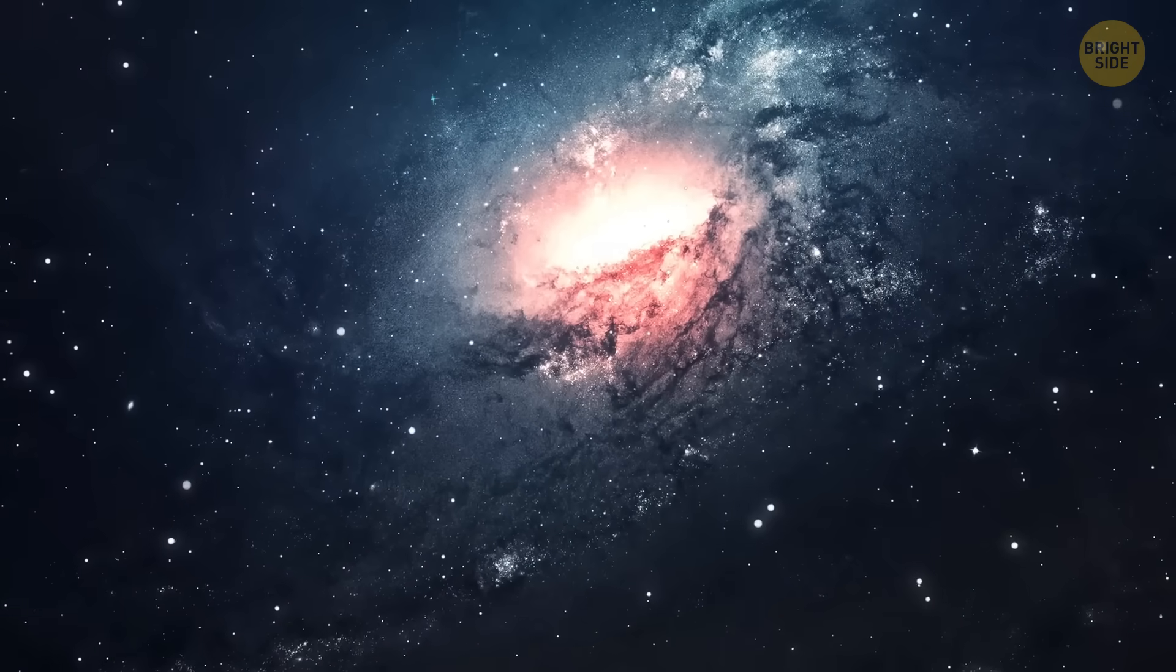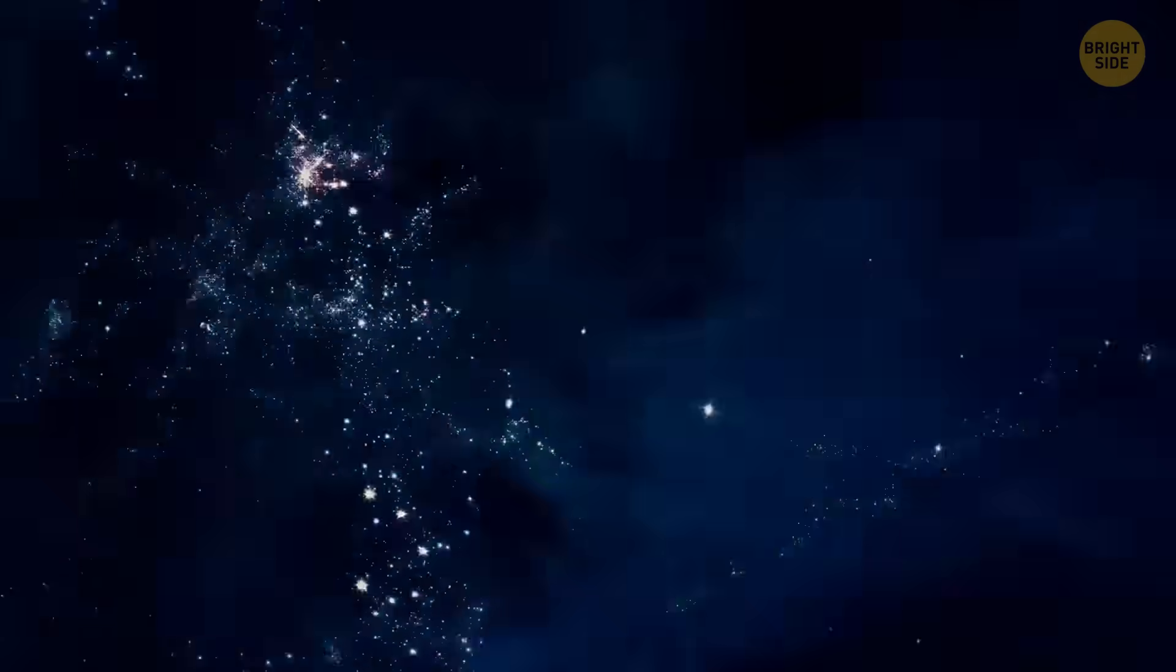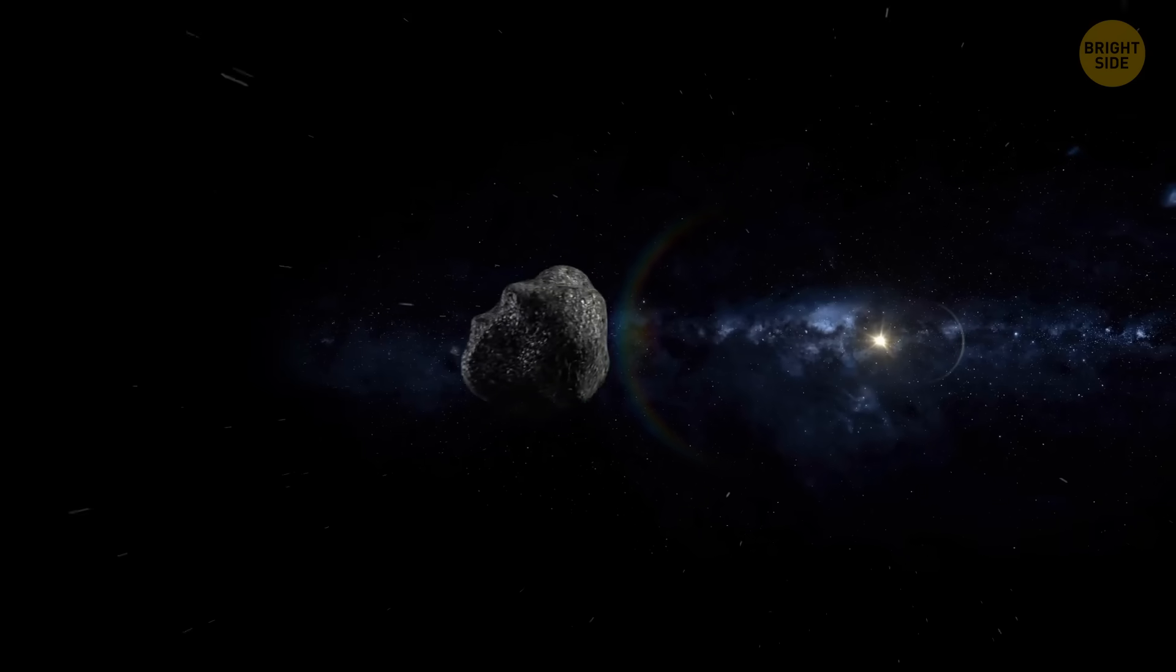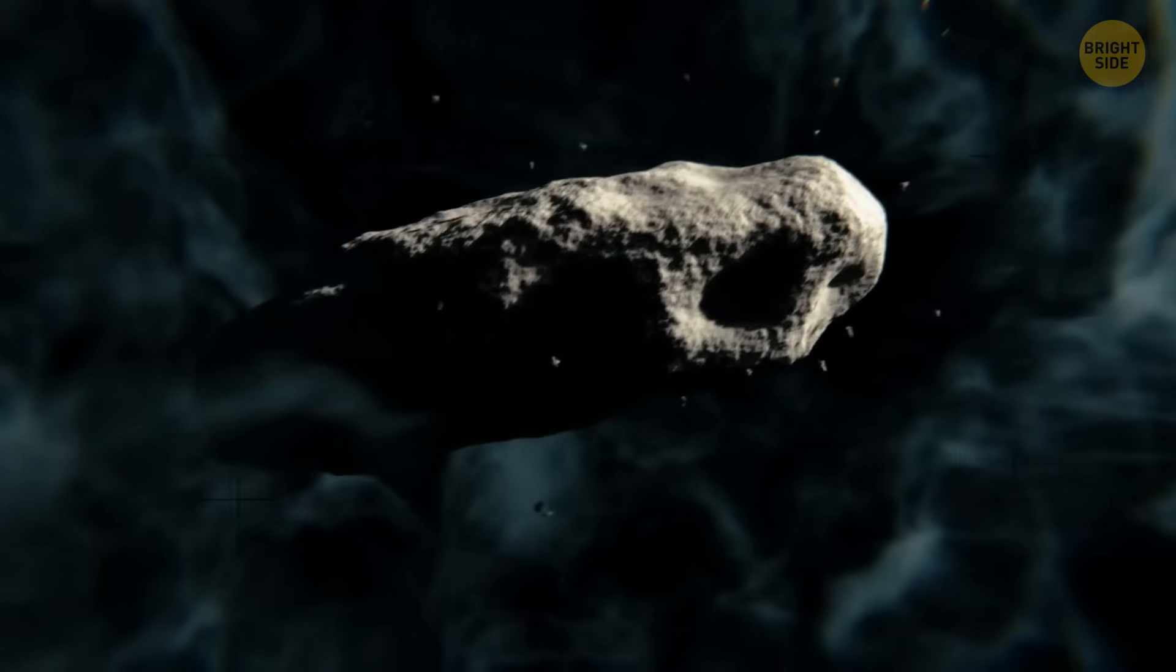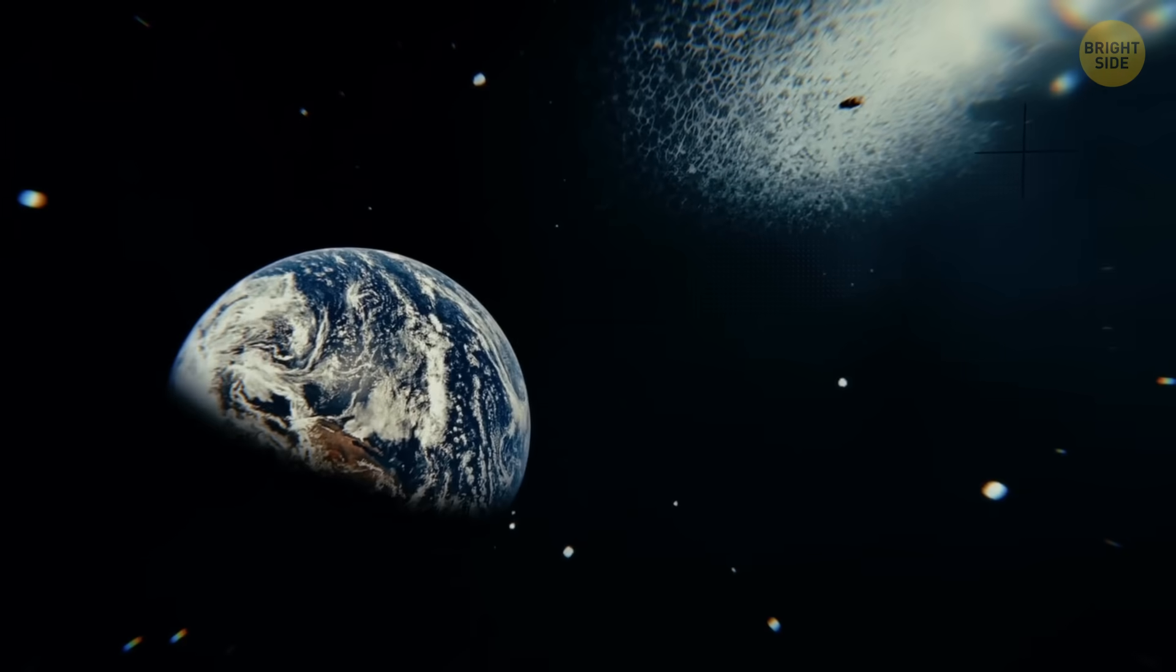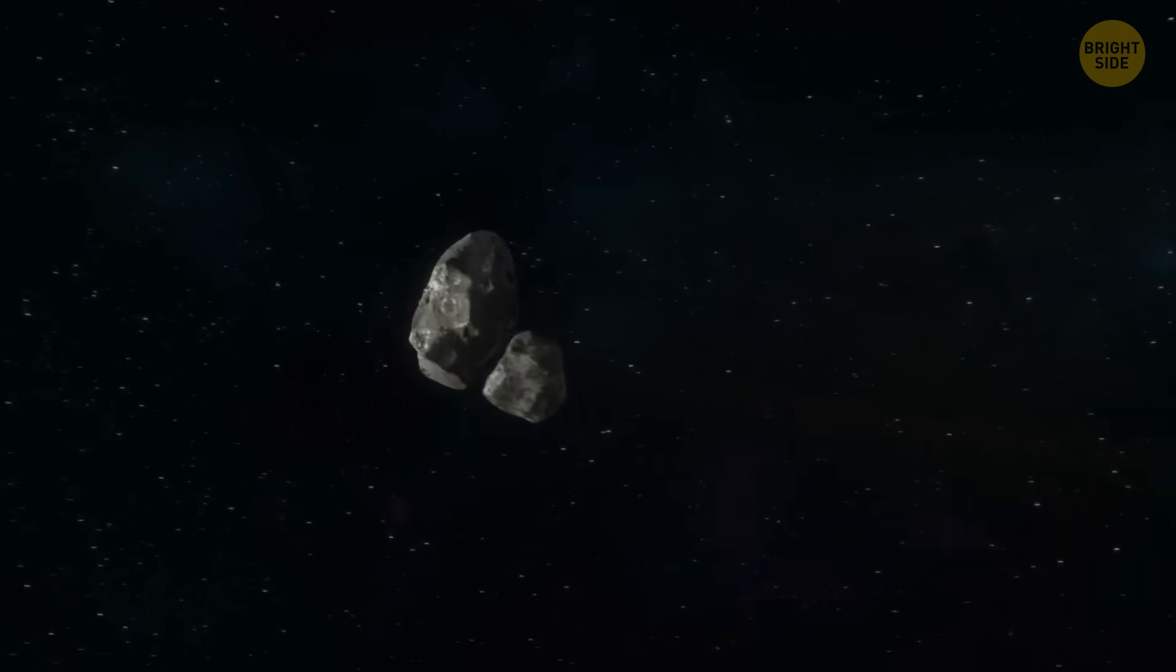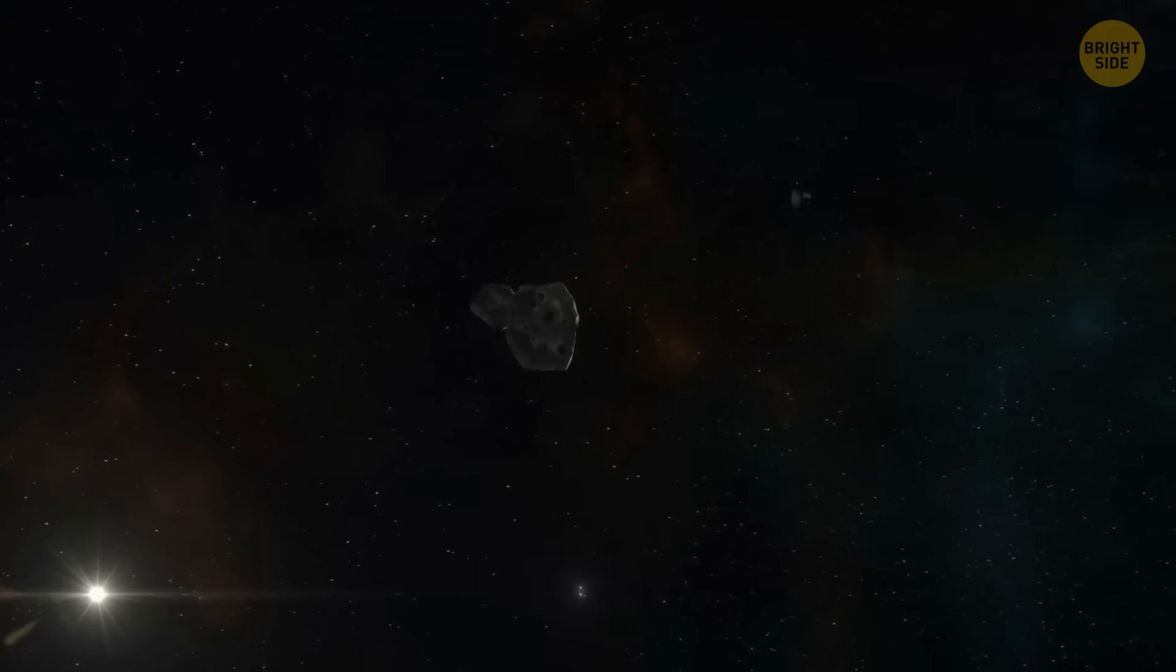Space only seems calm. It's actually pretty chaotic. The Sun, the Moon, Earth, and even other planets are constantly tugging on each other and smaller objects like these rocks. Most asteroids can't hold this delicate balance for long. They either get nudged into a new orbit, pulled closer to Earth, or flung out into the vast reaches of space.